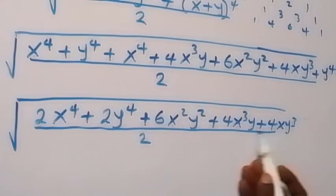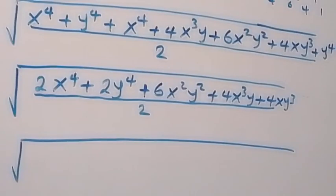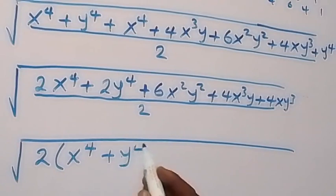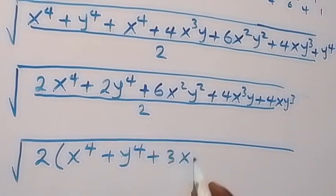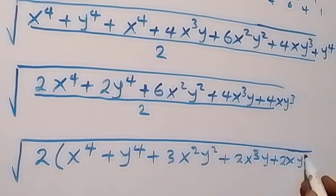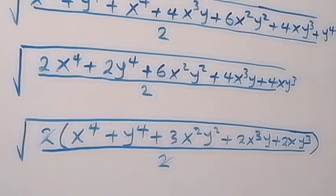From here we can factor 2 out from all of this. When we factor 2 out, this gives us square root of 2 times bracket: x raised to power 4 plus y raised to power 4 plus 3x squared y squared plus 2x cubed y plus 2xy cubed, close bracket, over 2. This 2 cancels with this 2, then this reduces to square root of...